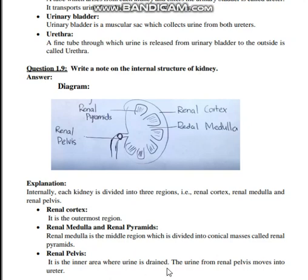The renal pelvis is the inner area where urine is drained. The urine from the renal pelvis moves into the ureter, then to the urinary bladder where it is stored, and then urine moves out of the body through the urethra. Students, you have to learn and write question numbers 1.8 and 1.9.